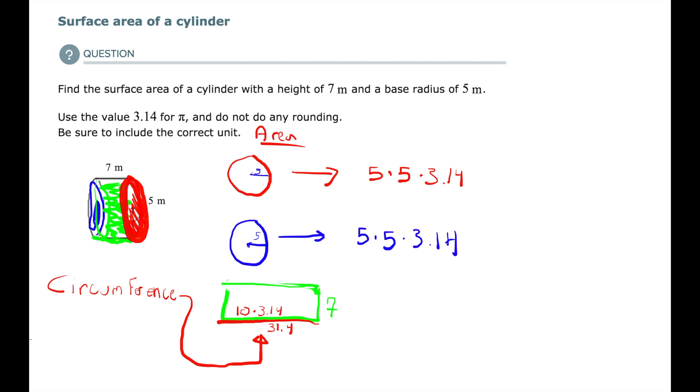And here, we have the area of a rectangle, which is seven times 31.4. If I add, if I put an equal sign here, and let's just write down what all these are, and let's add them together. 25 times 3.14 is 78.5. So this is 78.5. This is also 78.5. Those should be the same. They always should be the same, because it's the same shape. Seven times 31.4 is 219.8.